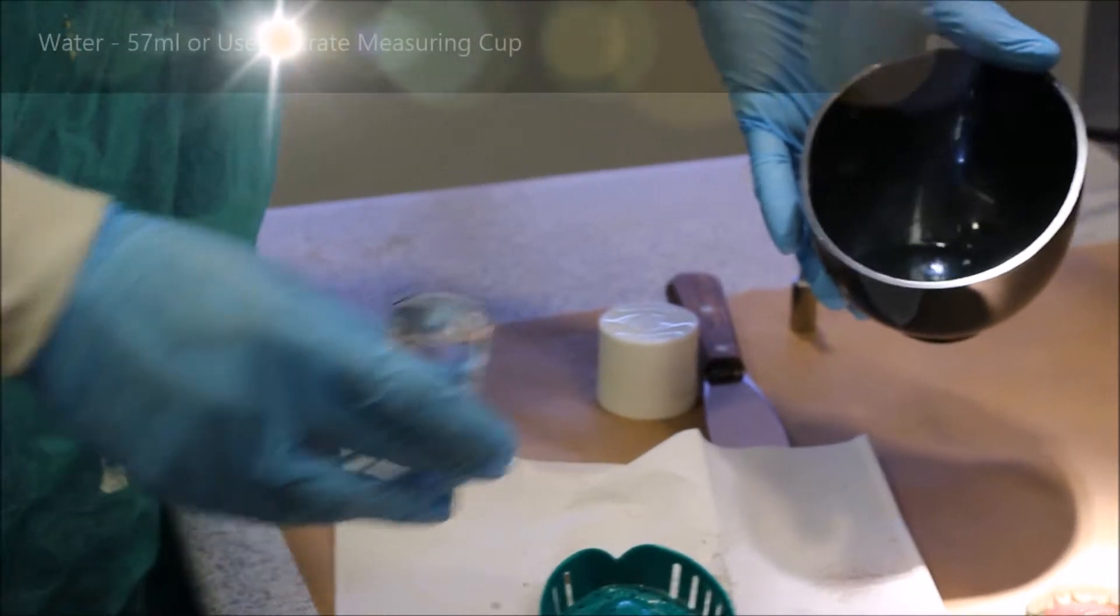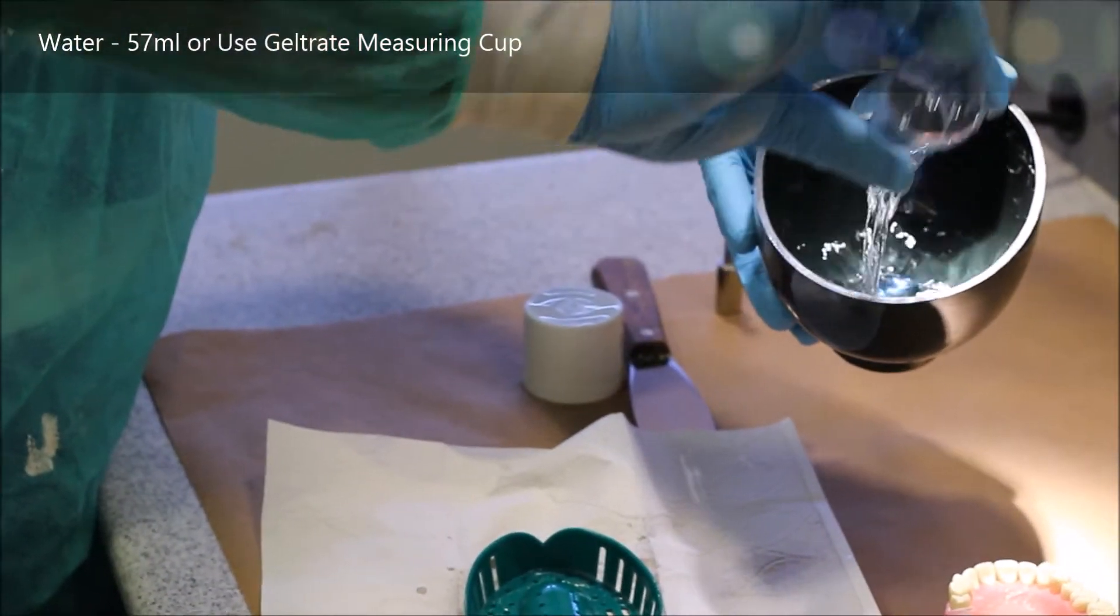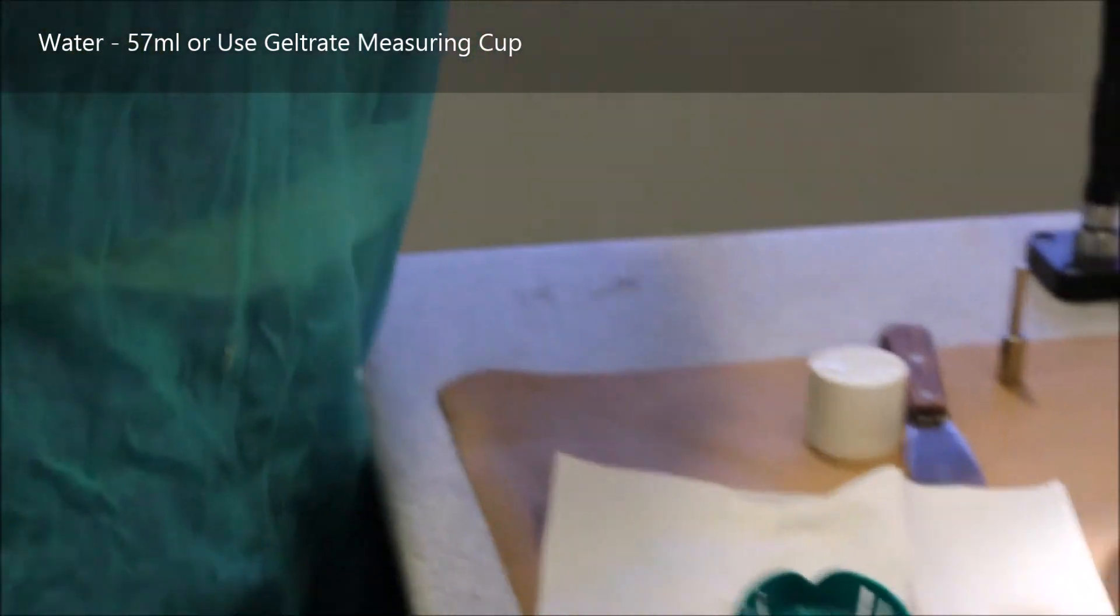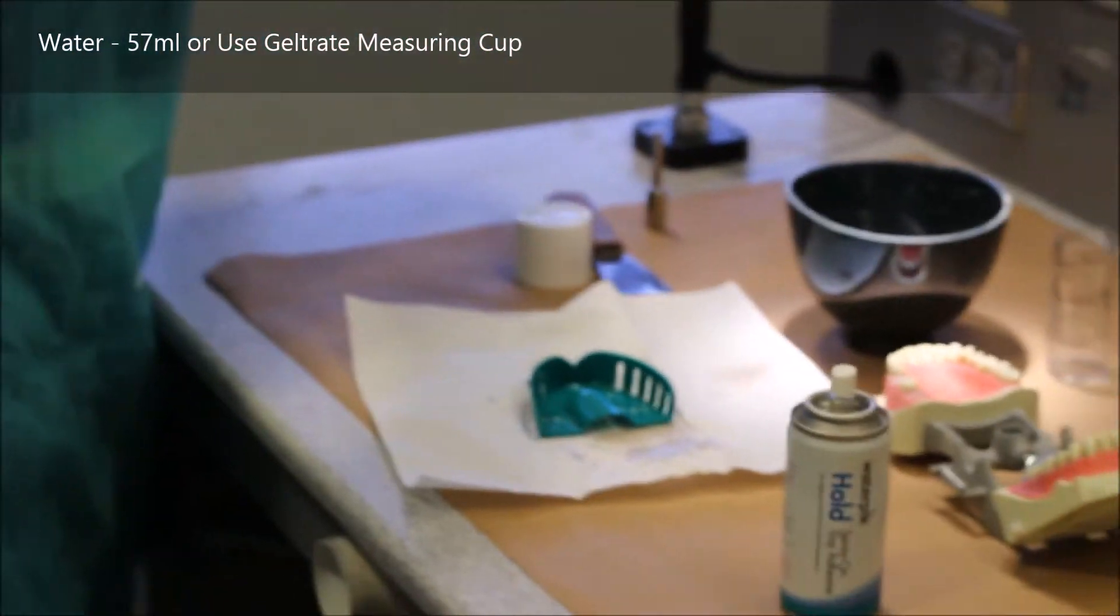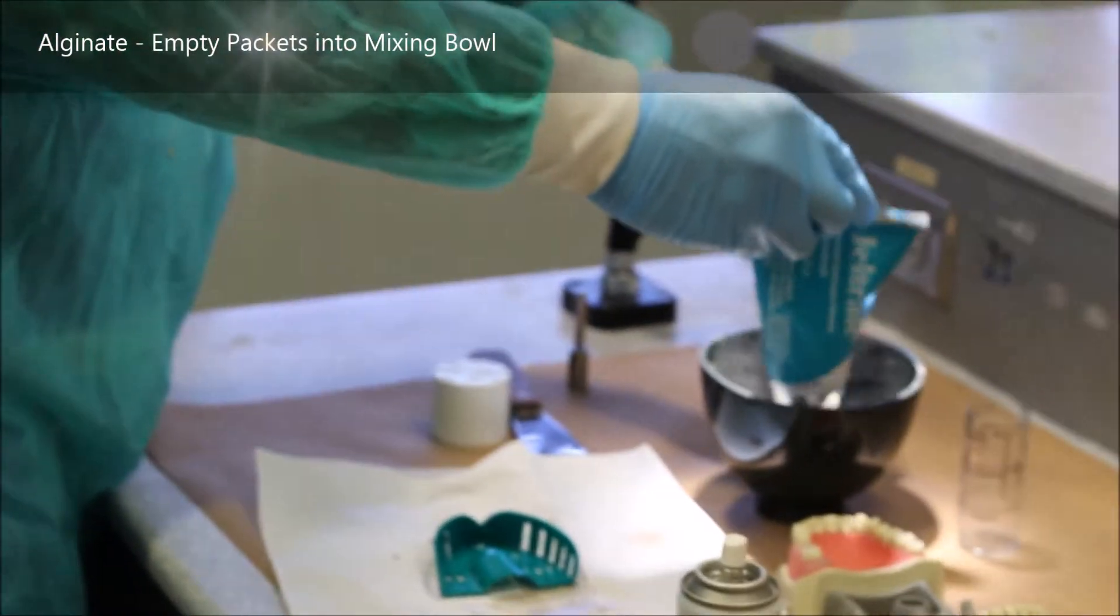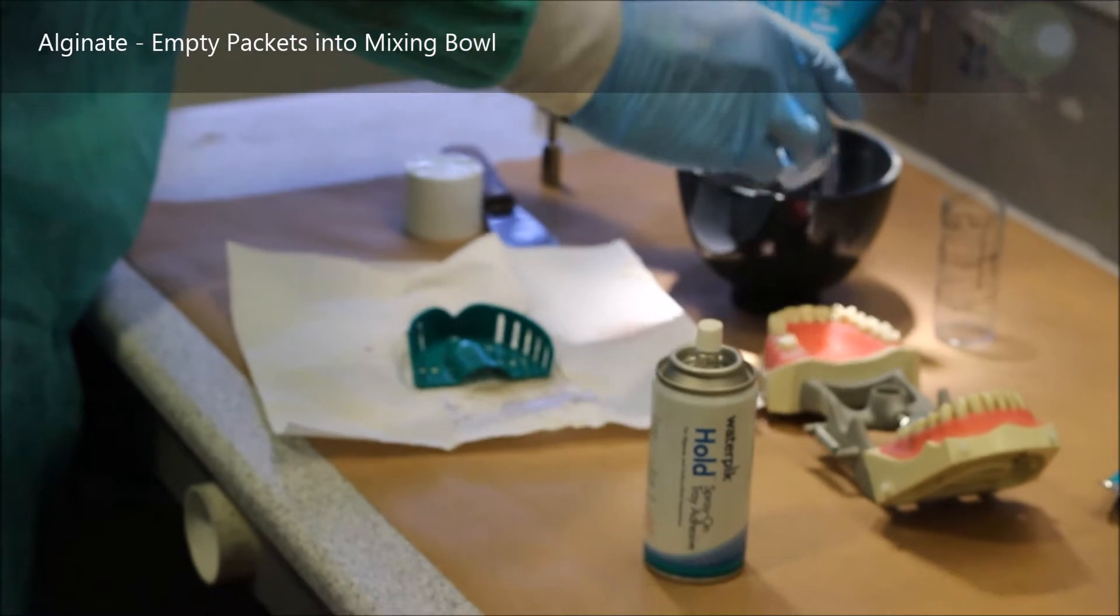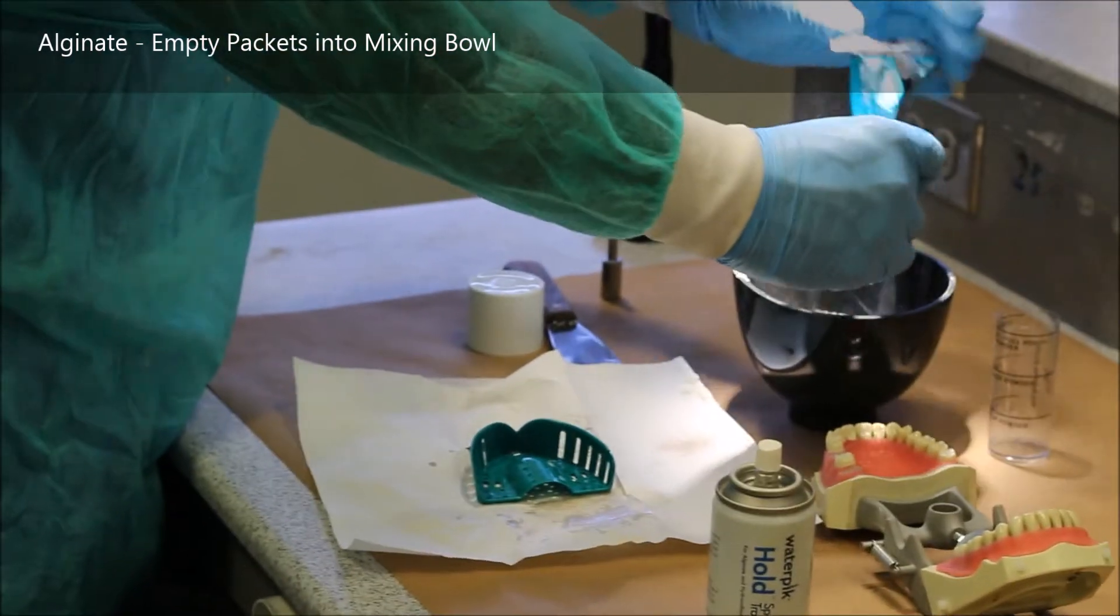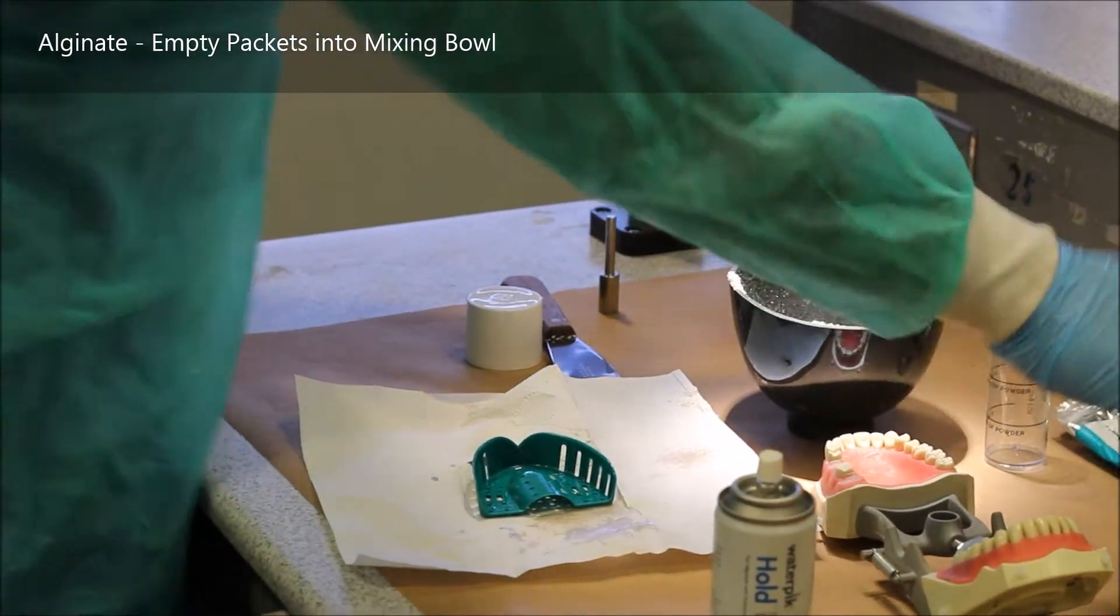At this point, you want to take the water that's pre-measured. Here I'm using two packets of alginate because it's the maxilla. You take both measures of water and place them in your mixing bowl. Then you grab your two packets of alginate and carefully empty out the powder into the mixing bowl. You always place water before you place the powder.